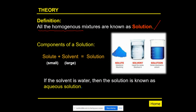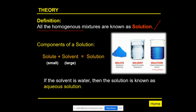A solution has two components. I've prepared a solution here by mixing this blue-colored solid sample with water. The smaller amount of component is called the solute, and the larger component is called the solvent. Solute and solvent together give you the solution.